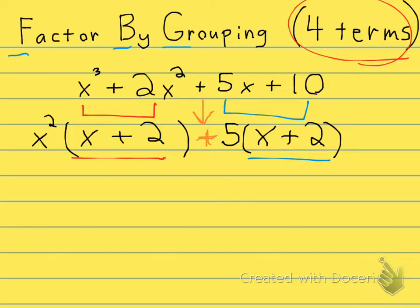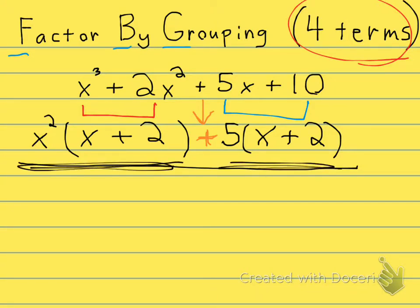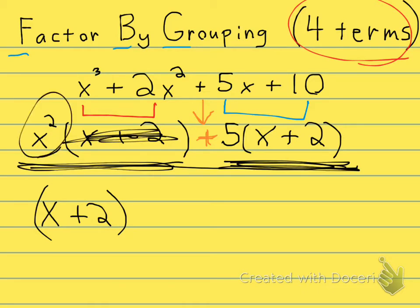Now, when I look at the whole thing, what's the greatest common factor between the first part and the second part? It's the x plus two. And when I take that x plus two out, what am I left with? Well, when I take this one out, I'm left with x squared. And when I take this one out, I'm left with plus five. So, that's what I'm left with, x squared plus five.